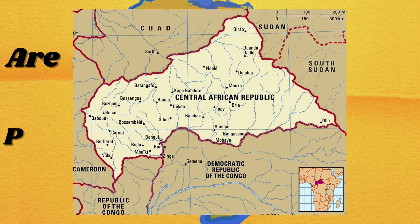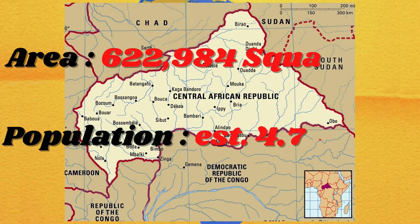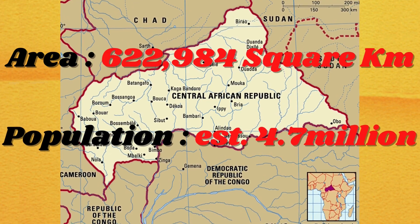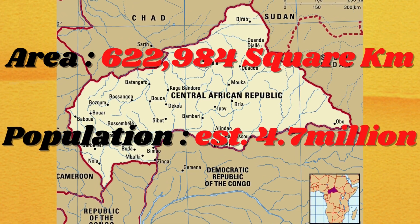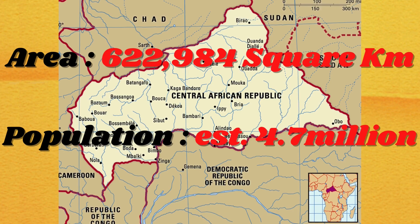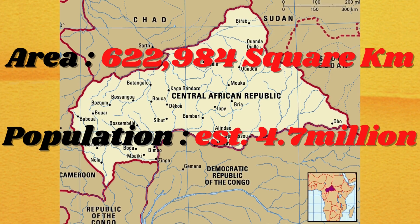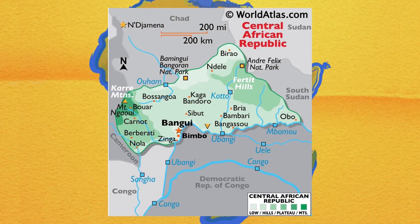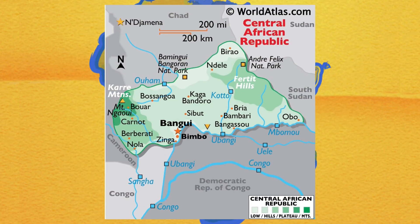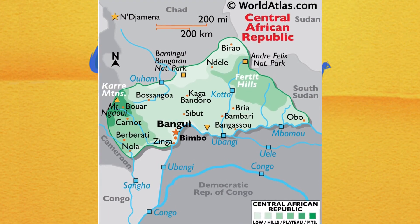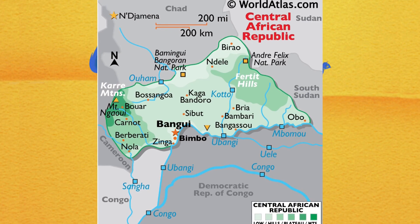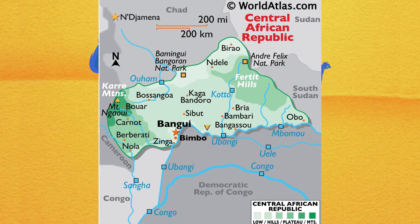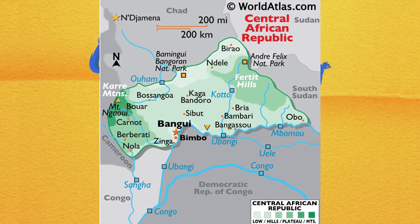The Central African Republic covers a land area of about 622,984 square kilometers, with an estimated population of around 4.7 million. Most of the Central African Republic consists of Sudano-Guinean savannas, but the country also includes a Sahelo-Sudanian zone in the north and an equatorial forest zone in the south.